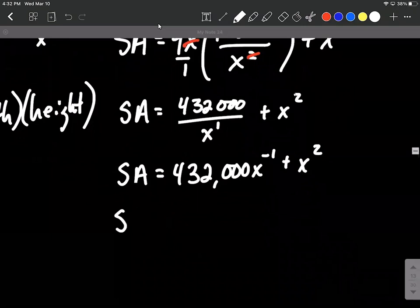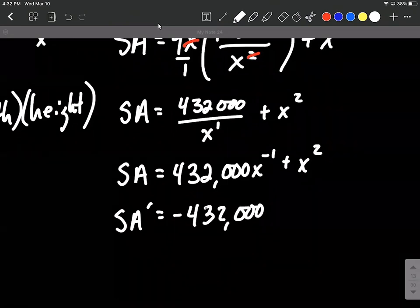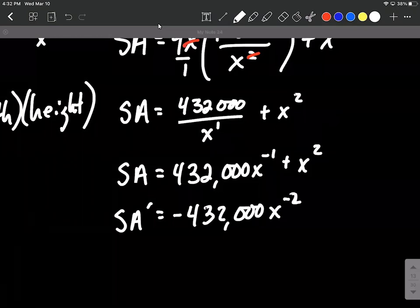All right, so now we wanna take the derivative. So utilizing the power rule, we're gonna bring the exponent down, multiply it by the 432,000 and reduce it by one. So negative one minus one makes negative two. Again, power rule, bring the two down, reduce it by one. So that'll be two X to the first power.